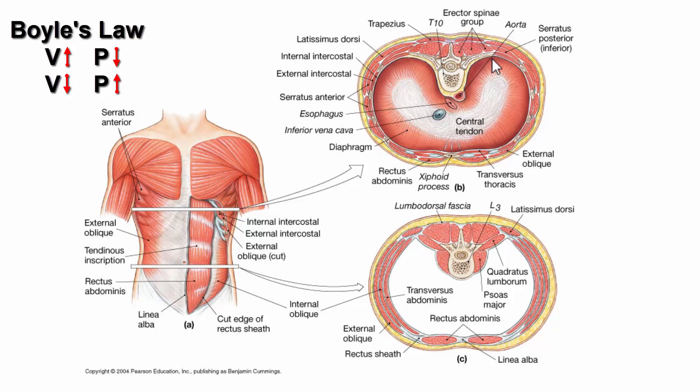When the diaphragm relaxes, it goes back to its dome shape, which makes the volume of the chest cavity smaller. Pressure is going to increase with a decrease in volume. Boyle's Law states that volume and pressure are inversely proportionate — with an increase in volume you get a decrease in pressure, and with a decrease in volume you get an increase in pressure. That's essentially how we bring air in and out of the lungs.